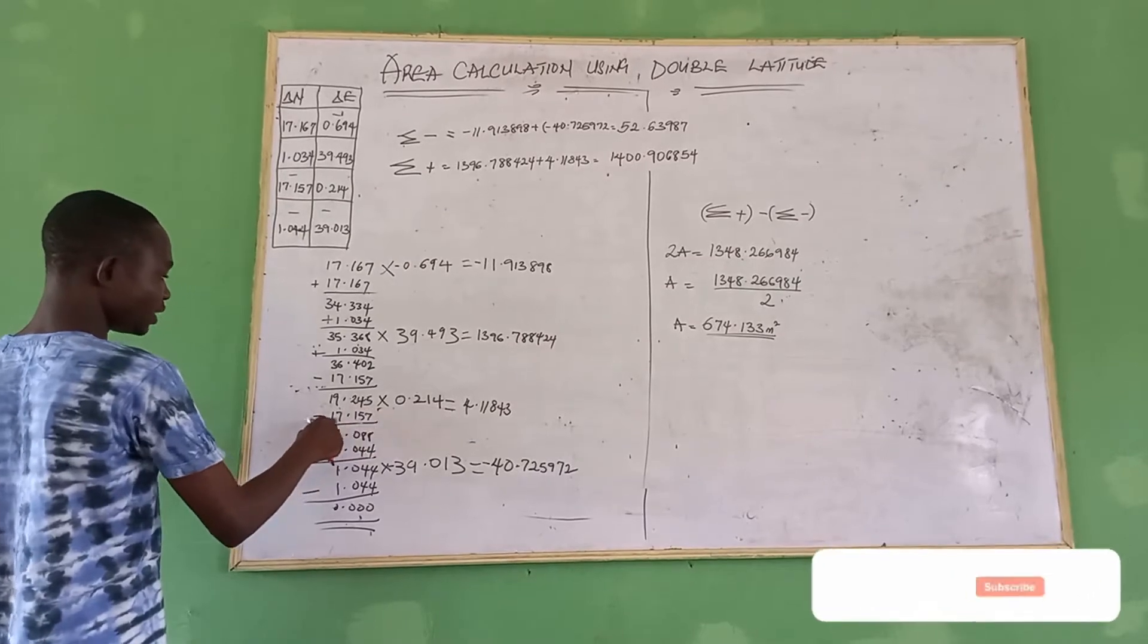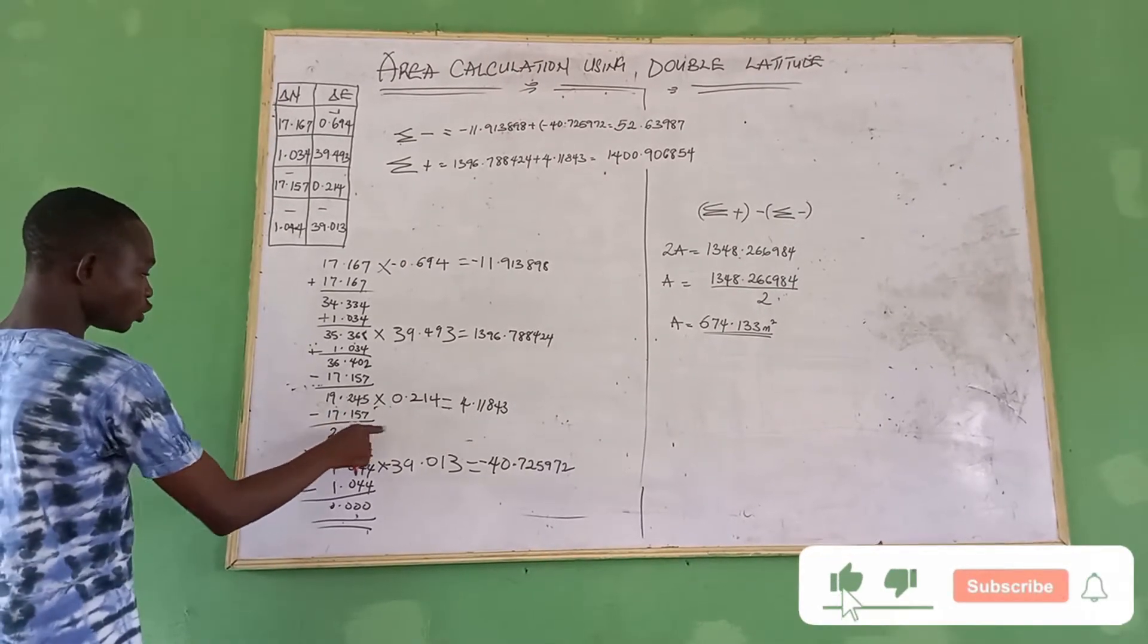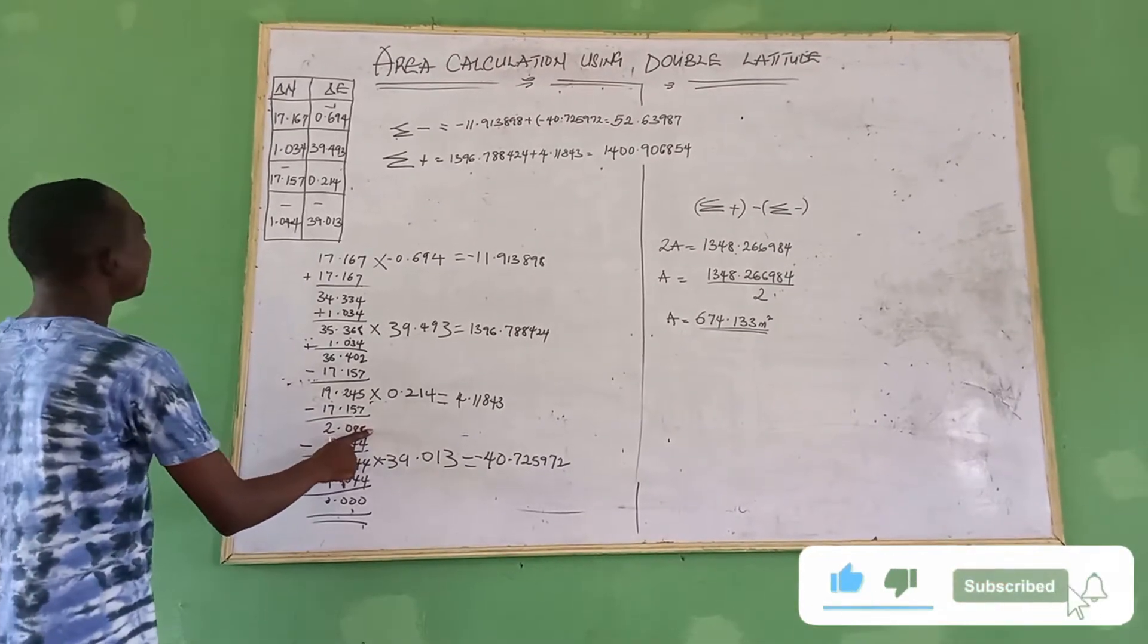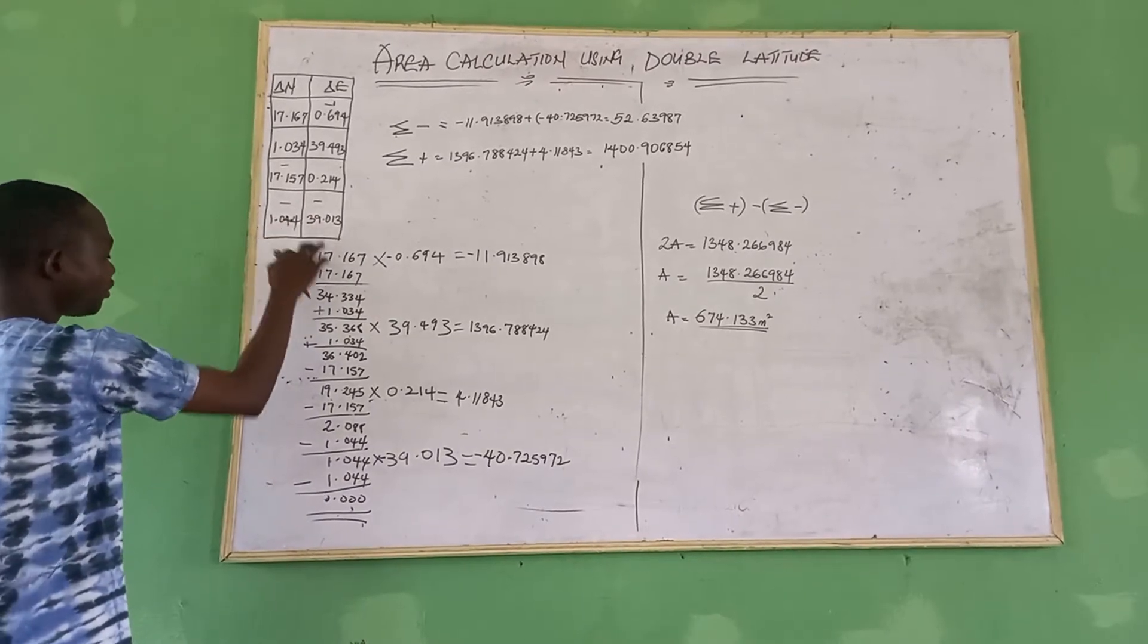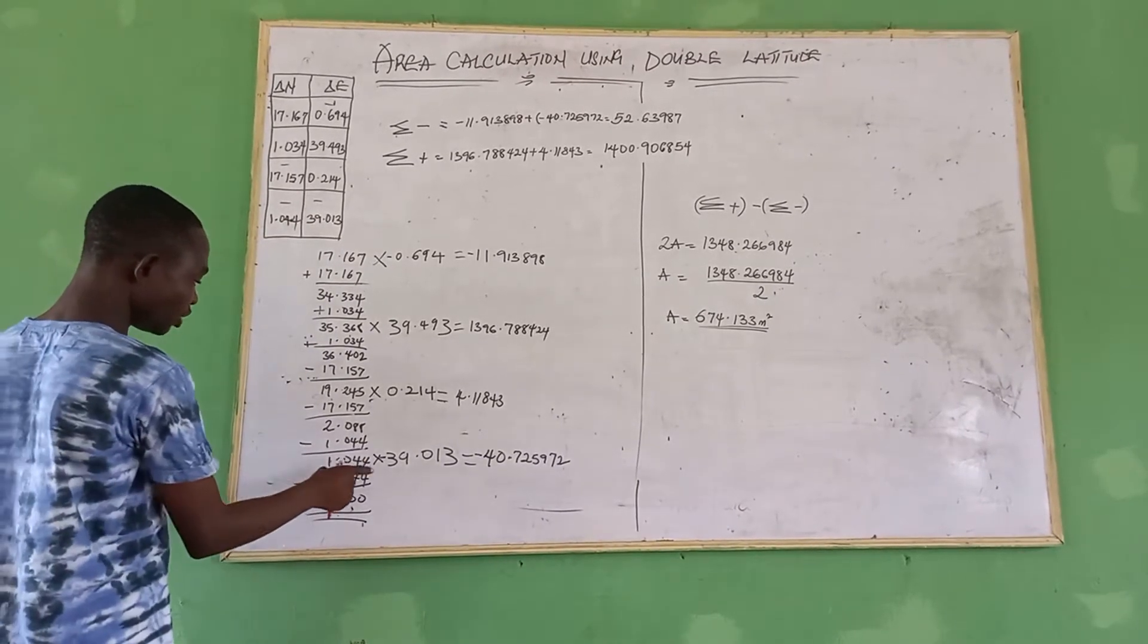Then you bring this one out the second time, 17.157. So we have this value, like the last one minus 1.044, which gives us this.